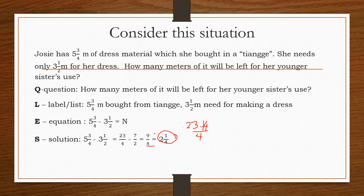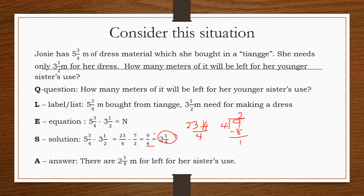So, how did nine over four become two and one-fourth? We have nine divided by four. Two times four equals eight, and the remainder is one — so it's not one-half but one-fourth. That's why we have two and one-fourth. We always use the remainder as our numerator. So our answer: there are two and one-fourth meters left for her sister's use.